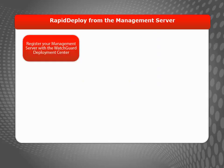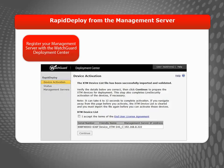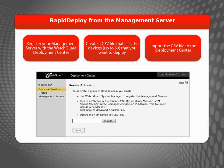If you use centralized management, you can use Rapid Deploy from the management server. To do so, register your management server with the WatchGuard Deployment Center. Then, create a CSV file that lists up to 50 devices you want to deploy for each management server. Import this file to the WatchGuard Deployment Center to create a basic configuration file for each device that sets the IP address the device must use in order to connect to your management server.